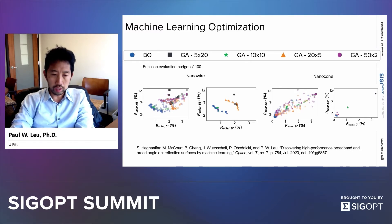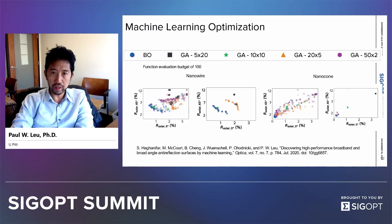Genetic algorithms are very sensitive to the population size used, so we tried a variety of population sizes and number of generations. The notation '5x20' means the population size was 5 and there were 20 generations used.